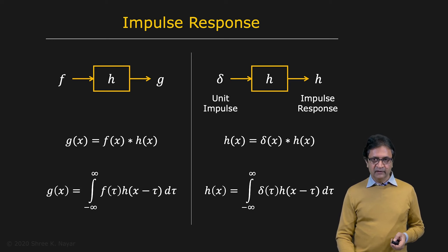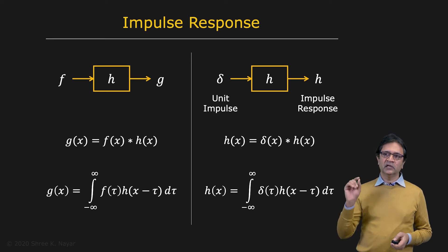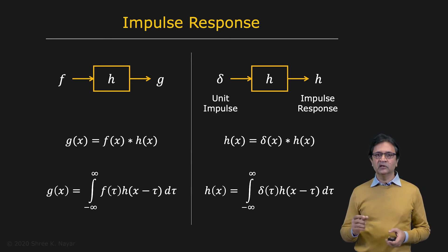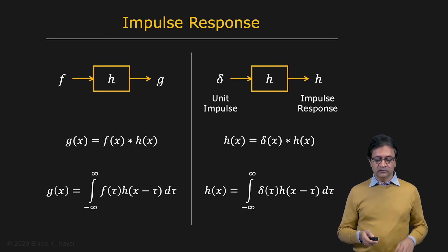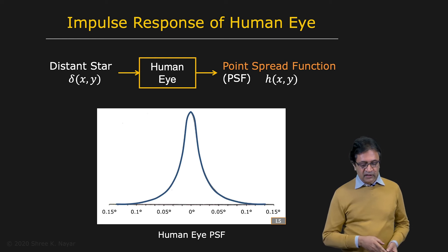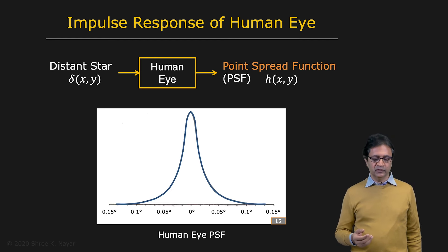So this is very interesting. If you want to characterize any linear shift invariant system, you know it's performing a convolution. All you need to do is to hit it with a unit impulse function. Whatever its output is, is telling you what that system is doing in full.